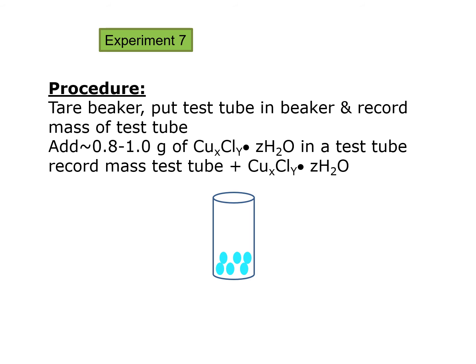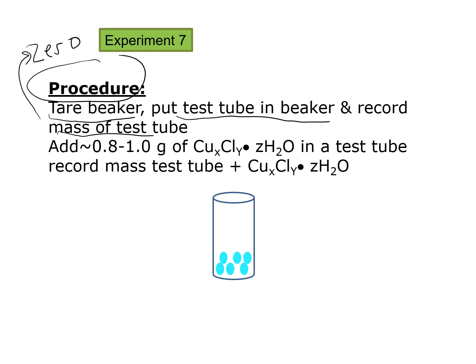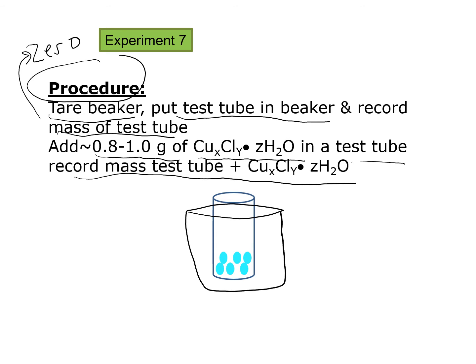The procedure for experiment 7 is as follows. First, tare a beaker on your scale — push the zero or tare button to subtract the beaker's mass. Then place a test tube inside the beaker and record the mass of the test tube. Next, add between 0.8 to 1 gram of copper chloride hydrate into the test tube and record the mass of the test tube plus the copper chloride.